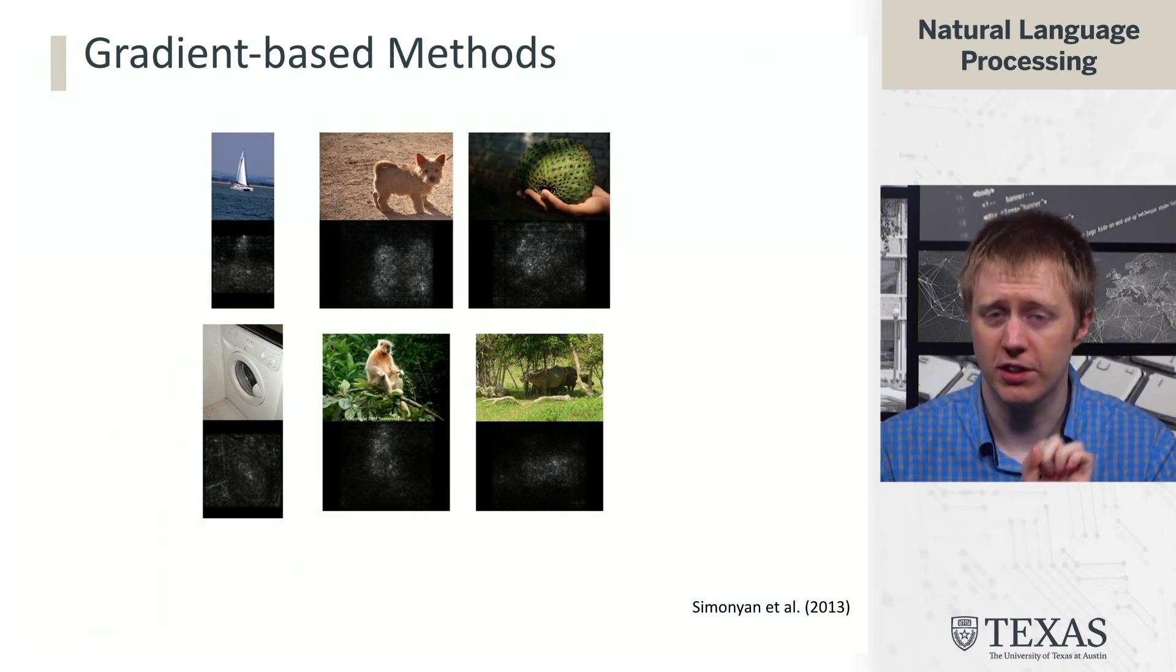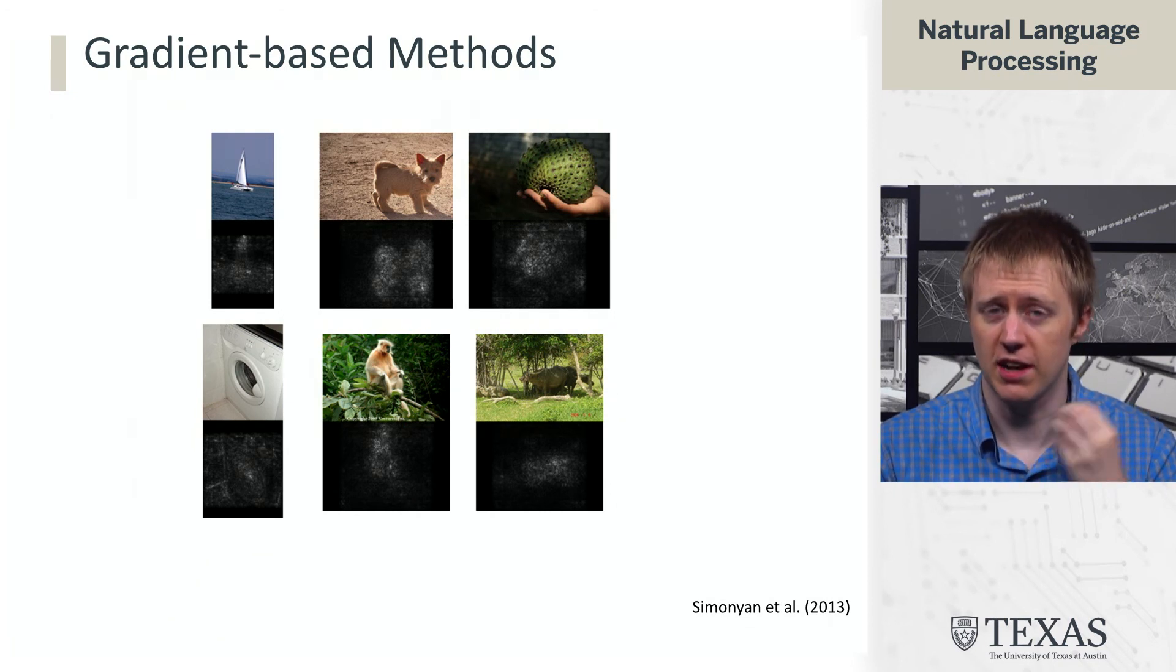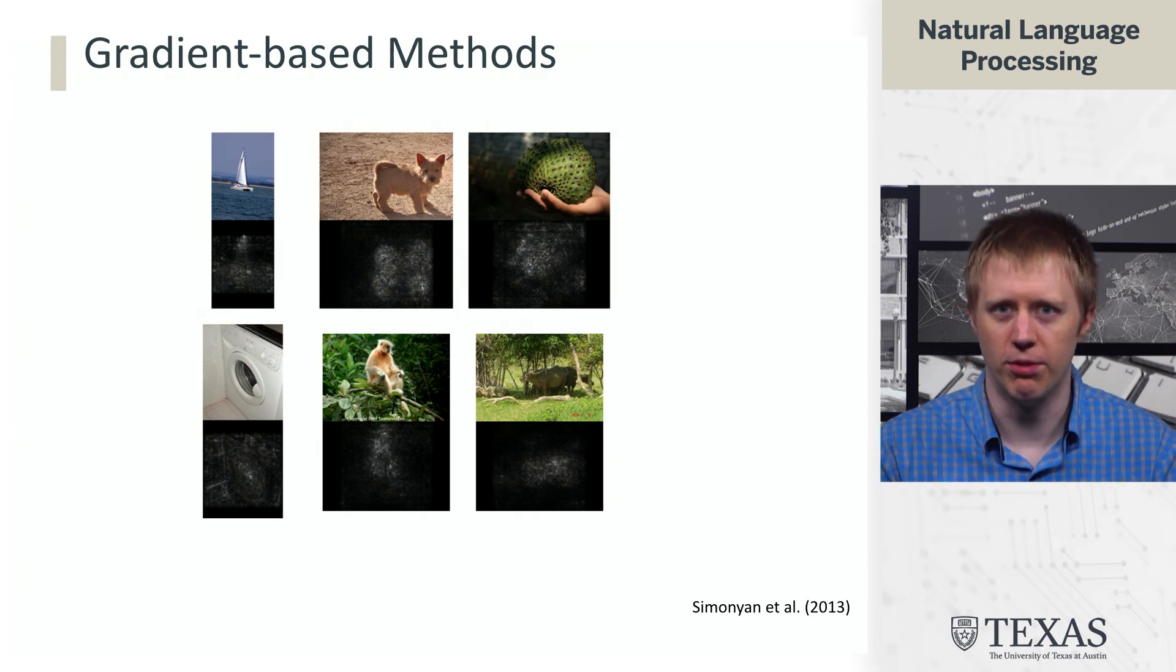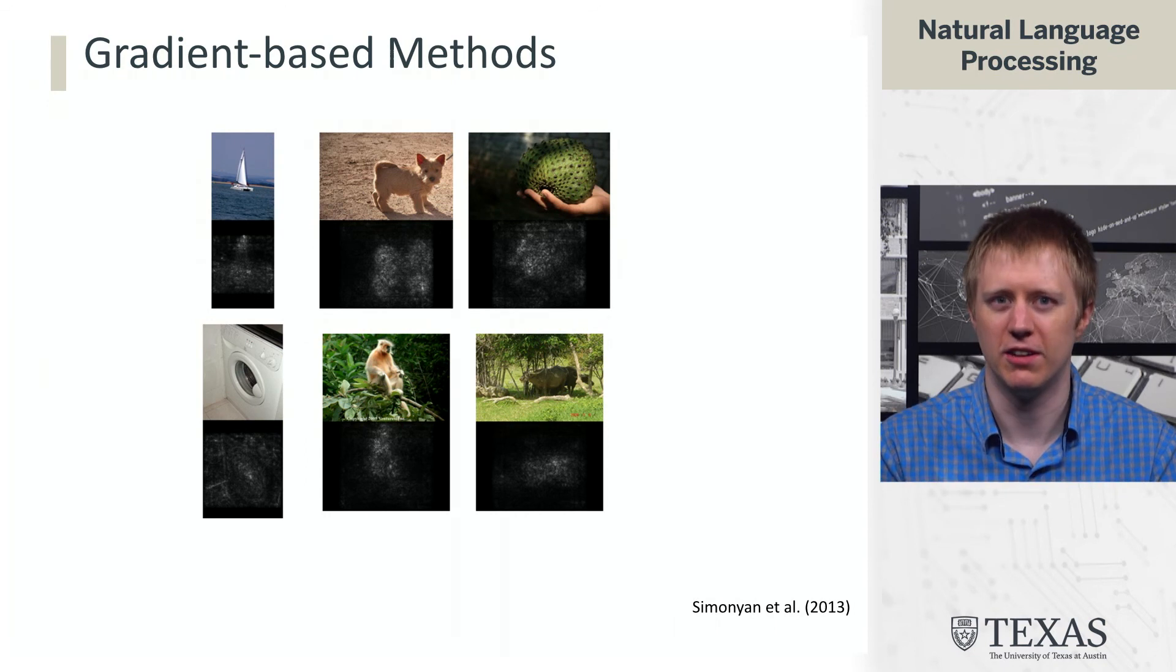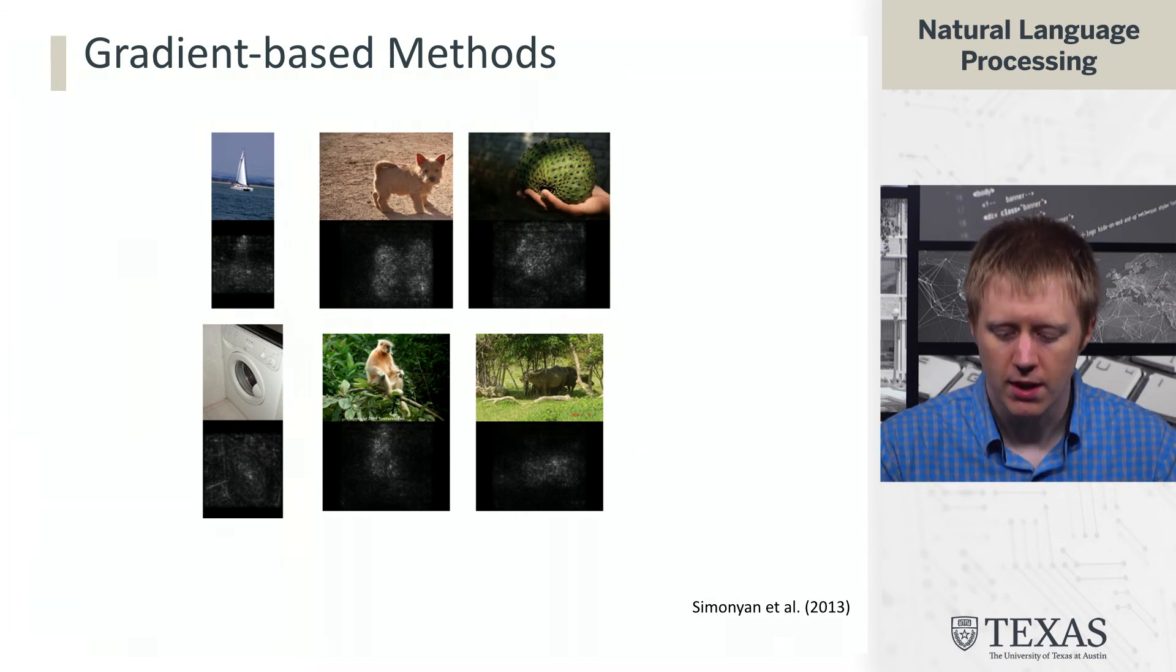Now, importantly, we can't actually tell whether this is a good explanation method just from looking at these pictures, because what we don't know is if we remove these pixels the model said is important, would the prediction change? This kind of counterfactual thing is not being evaluated here. But regardless, it at least gives us some confidence that either something reasonable is happening in the model, or the explanation technique at least aligns with what we kind of expect the model to be doing.